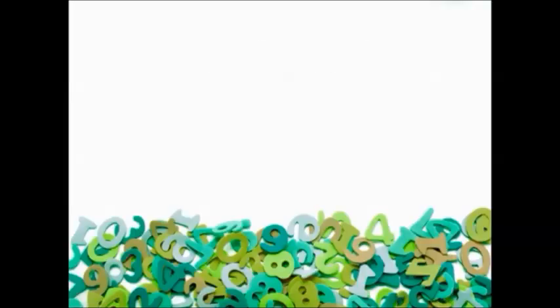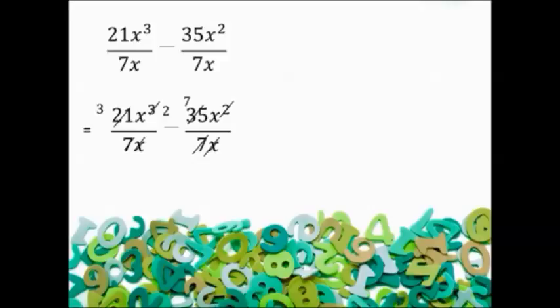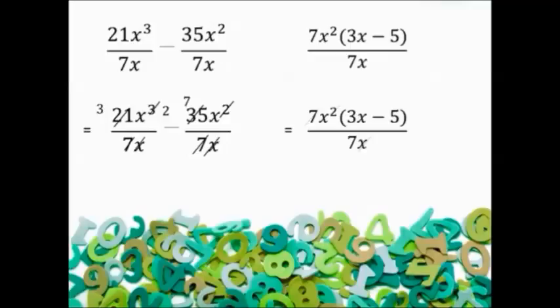The first method is to split the division into two fractions, each with only one term on top, and then reduce. Or you could factor out the common factor from the top and bottom, and then cancel off.